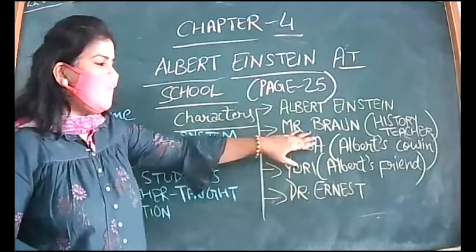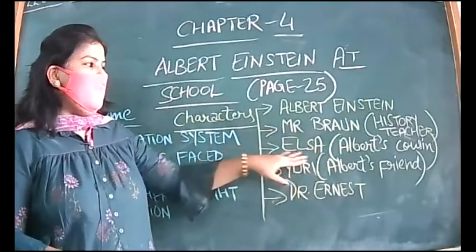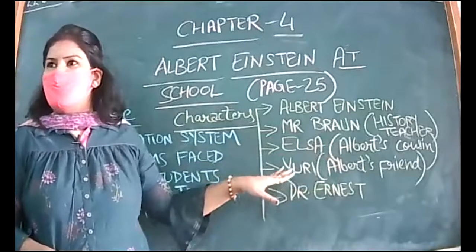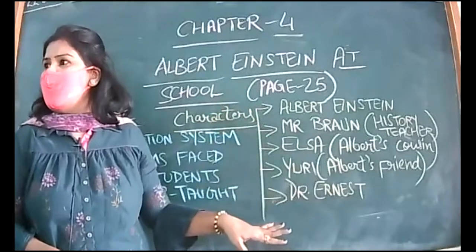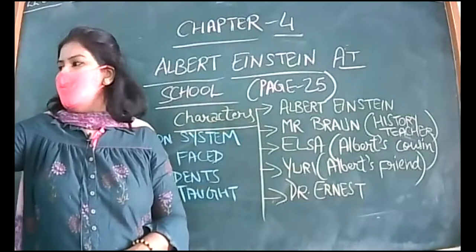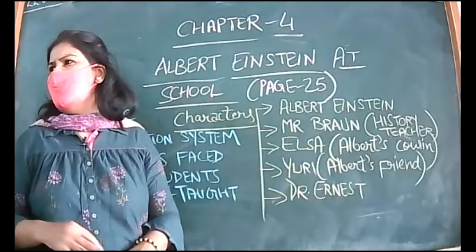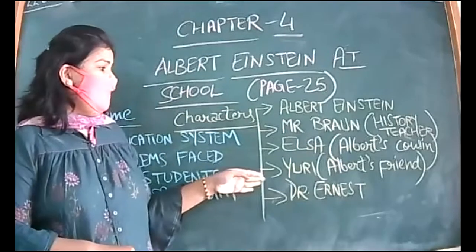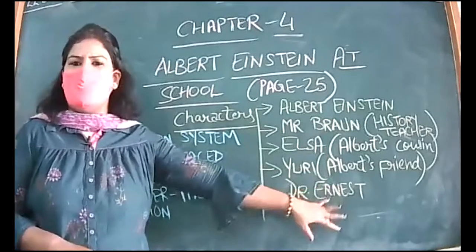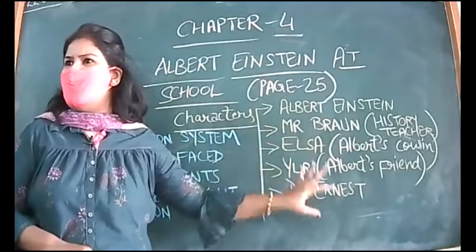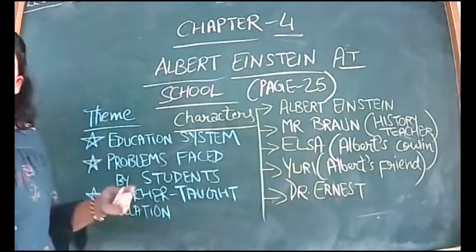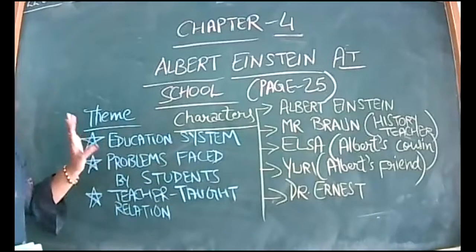Mr. Braun is the history teacher. Elza is Albert's cousin and his support system in times of need. Yuri is Albert's friend. Dr. Ernest will be introduced later — he has a role in the middle or end of the chapter. There will be some more characters I'll tell you about as we go.